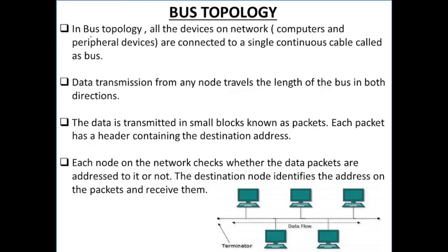Next we have bus topology. In bus topology, all the devices on the network — computers and peripheral devices — are connected to a single continuous cable called bus. All the nodes and devices are connected to a central cable. Data transmission from any node travels the length of the bus in both directions — when any node or device connected to a bus transmits data, that data travels in both directions.